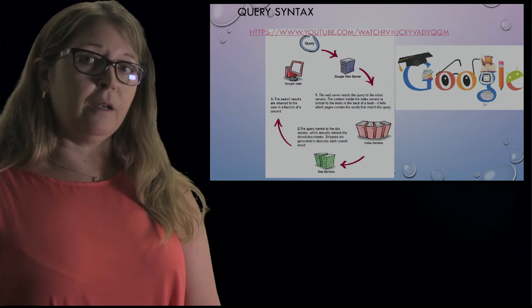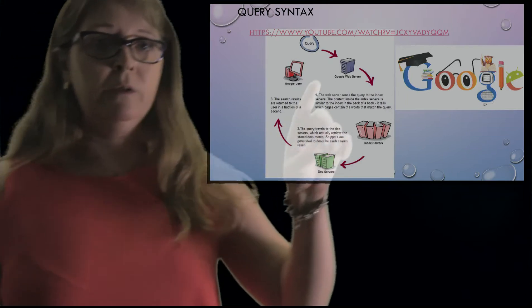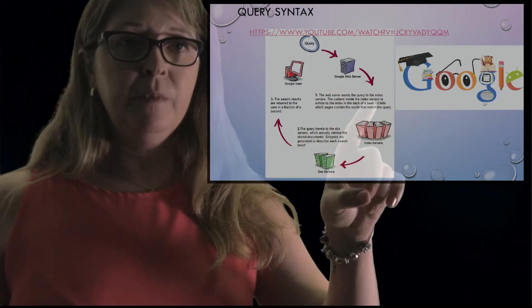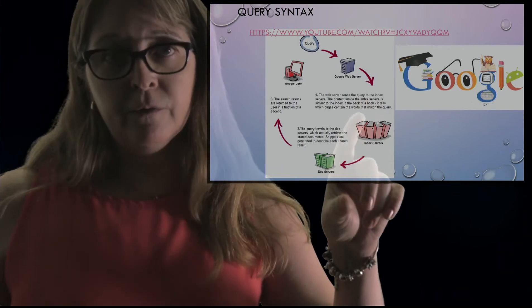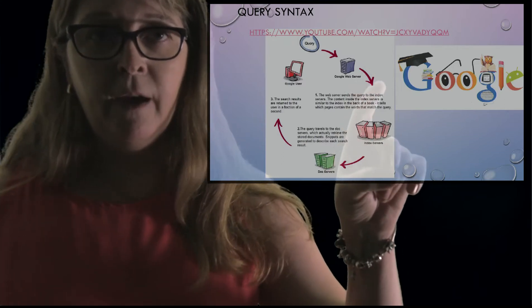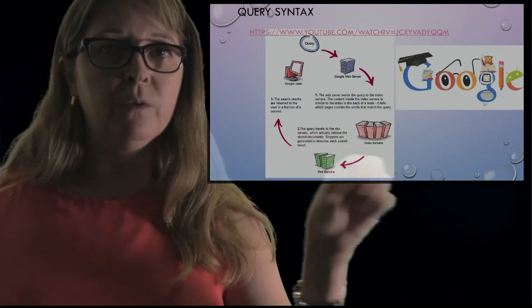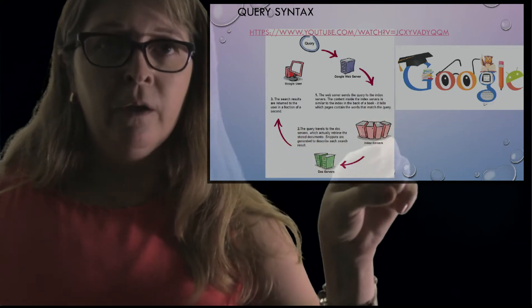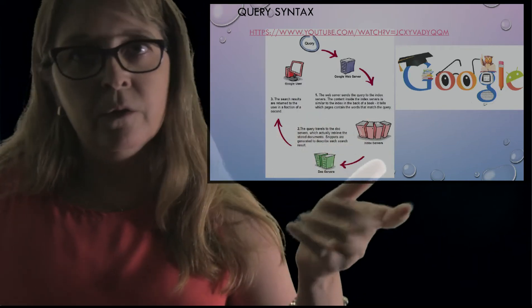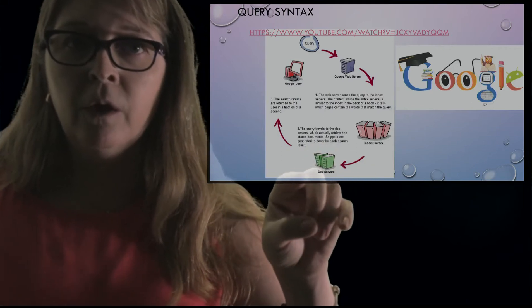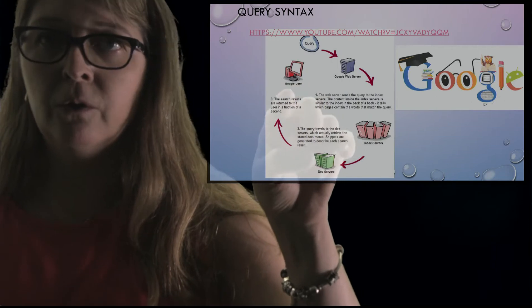Let's look at a Google search, a query. You start with the web server. The web server sends this query to an index server, and it looks at the particular words within the query. It goes to the doc servers, which retrieve the documents, or it could also be the images, or what have you, and then it's returned to the Google user — that would be you.